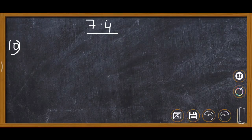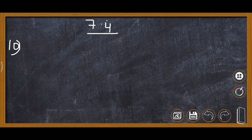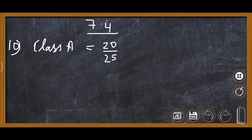In Class A, 20 out of 25 students passed, so the fraction is 20 upon 25. Simplifying: 5 fours are 20 and 5 fives are 25, so it becomes 4 upon 5. The fraction of Class A getting first class is 4 upon 5.